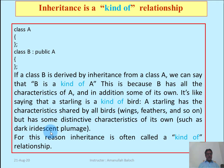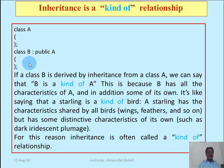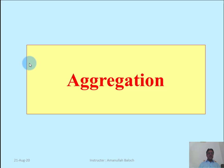Wings and feathers are characteristics that the starling inherits from its base class. For this reason, inheritance is often called a 'kind of' relationship — the derived class is a kind of, or a type of, its base class.